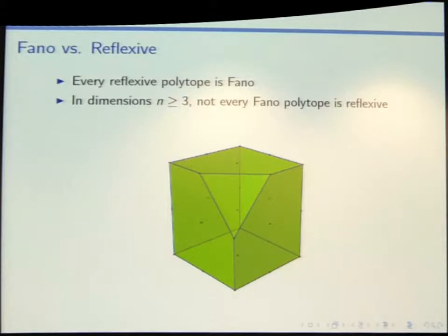This truncated cube is the standard example of a polytope that has only a single interior point but isn't reflexive. The way you'd figure that out is to write down the equation for this truncated triangle and just notice that it has some one-halves in it, which is no good. You can classify reflexive polytopes.